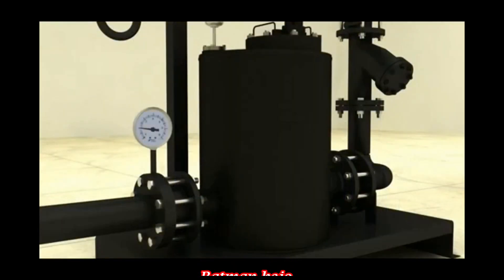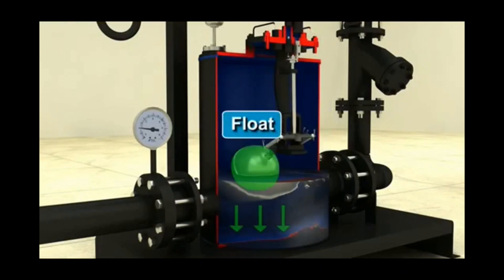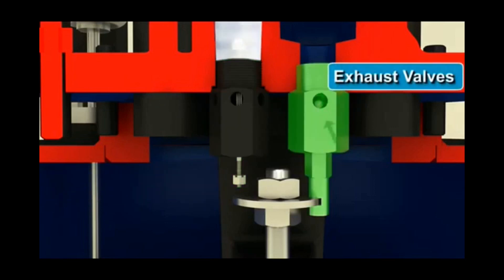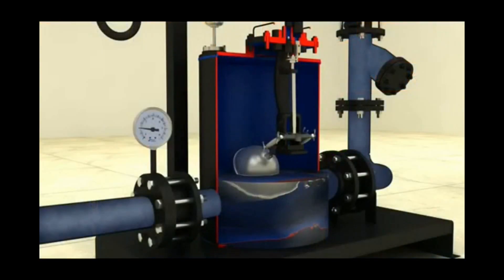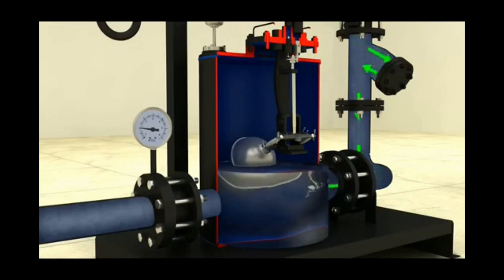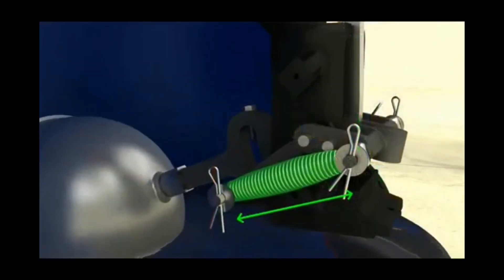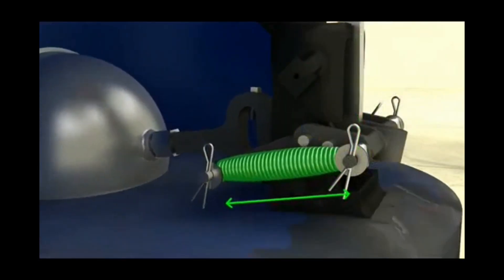Initially, before startup, the float is at the lowest position with the steam or air inlet valve closed and exhaust valve open. When condensate flows by gravity through inlet check valve into pump body, the float will become buoyant and rise. As the float continues to rise, the mechanism link is engaged which increases tension in the springs.